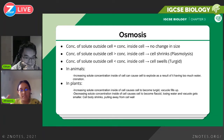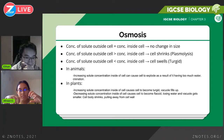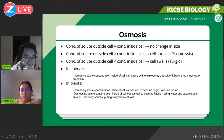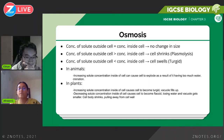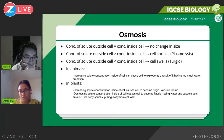When the concentration of solute is greater outside the cell than inside, water moves outward from the cell. The net movement of water is out of the cell, so the cell shrinks because its water content decreases. This process is known as plasmolysis — you can say the cell has been plasmolyzed, or simply that the cell shrinks.